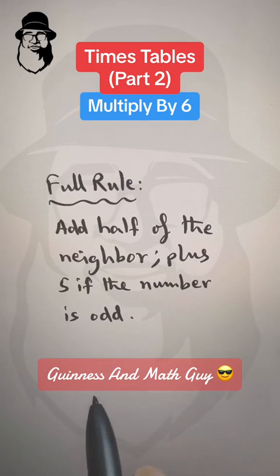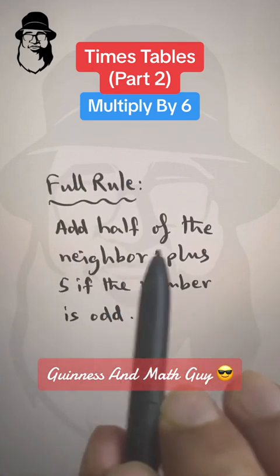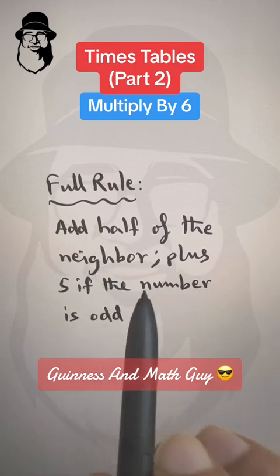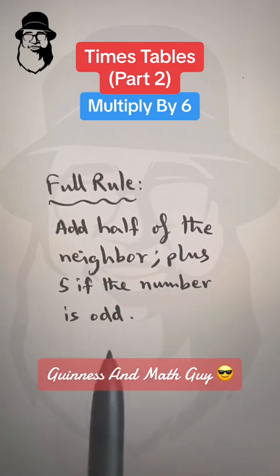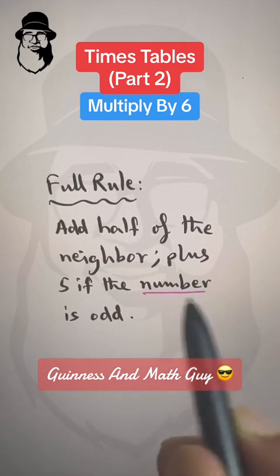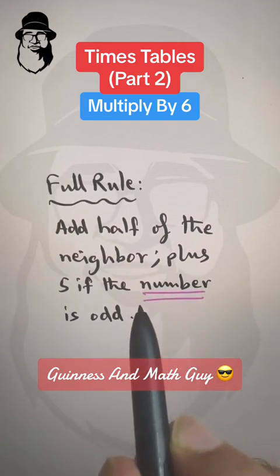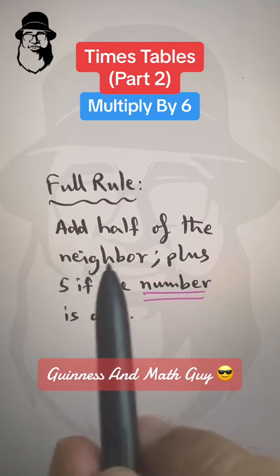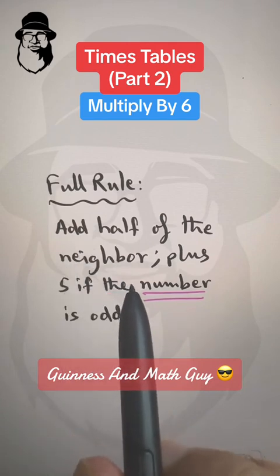Now let me tell you the full rule. The full rule is: add half of the neighbor, plus 5 if the number is odd. Be careful here — we are talking about the number, not the neighbor. If the number itself is odd, then we add an extra 5. Other than that, it's the same rule as before.